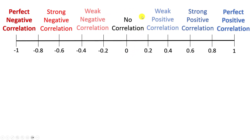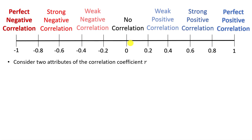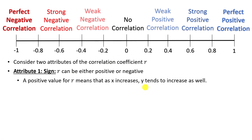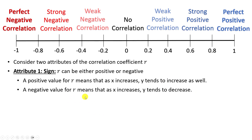We'll look at graphs of what no correlation looks like. When asked to describe the correlation coefficient r, I'm really asking for two things: the sign and the strength. A positive value means that as x increases, y tends to increase as well. A negative value means that as x increases, y tends to decrease.